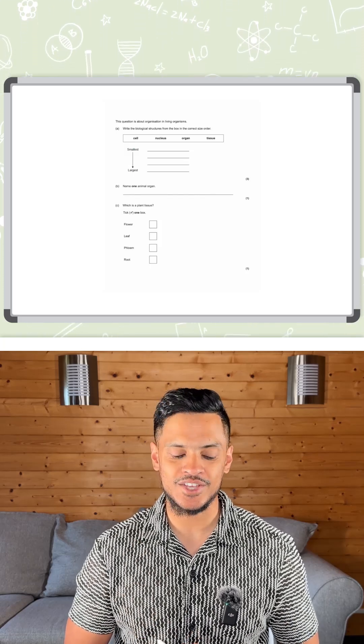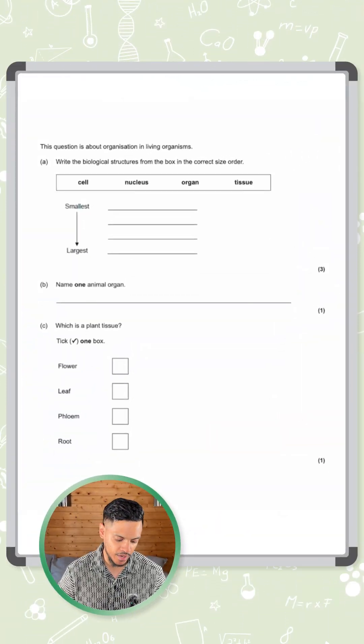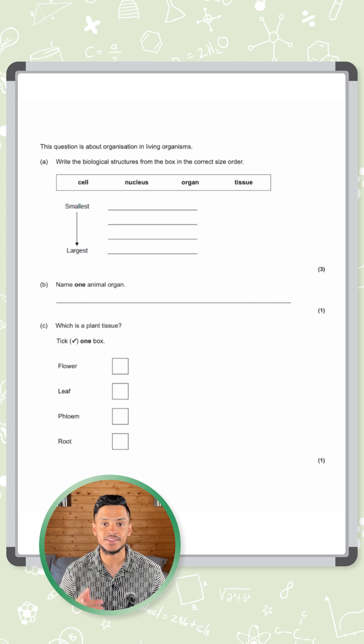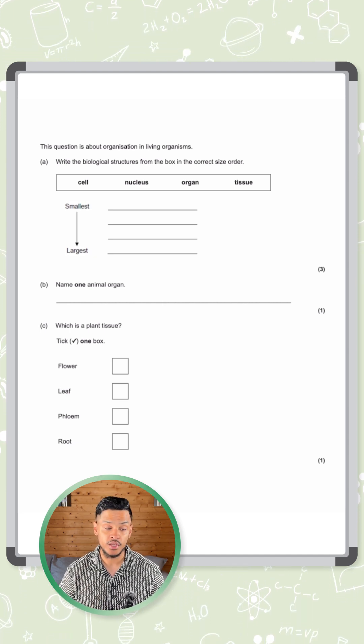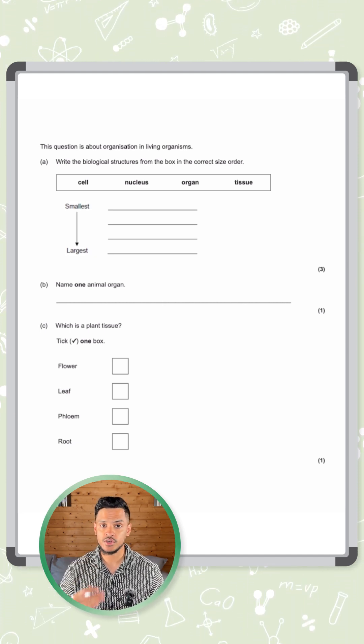Right, this question is all about organization. The question says write the biological structures from the box in the correct size order. So we're going from smallest to largest.